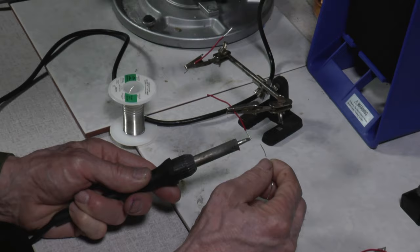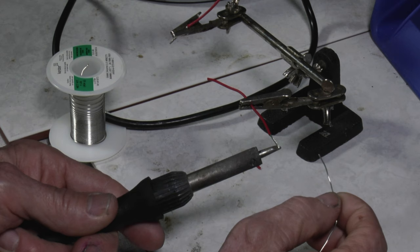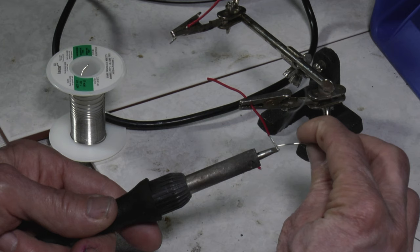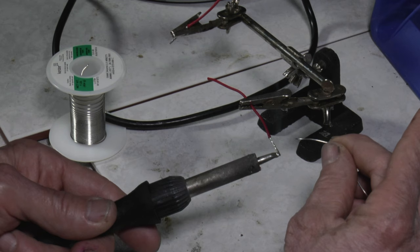We're going to put the solder iron underneath the wire. Then we're going to put the solder on the opposite side of the wire, and then it should flow as we drag this along.